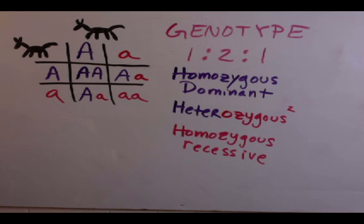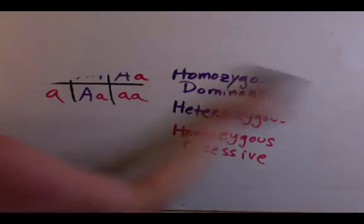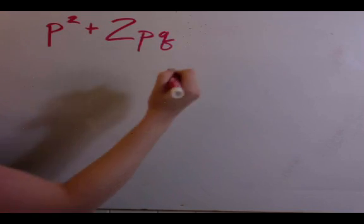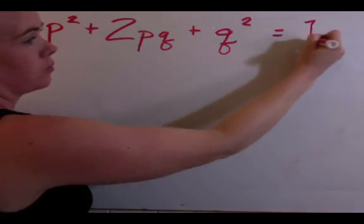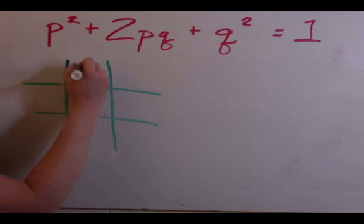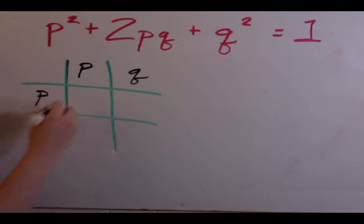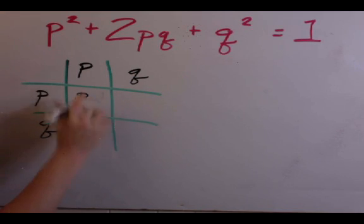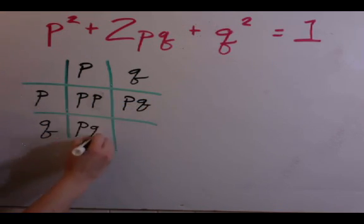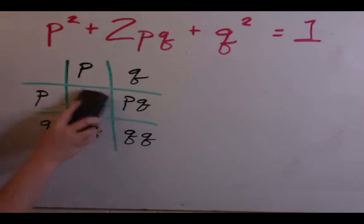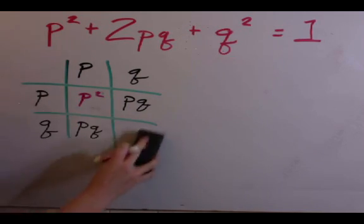The Hardy-Weinberg equation is a way to calculate genetic variation of a population at equilibrium. To explore this equation, we can examine simple genetic locus at which there are two alleles. P represents the dominant allele, and Q represents the recessive allele. Now, visually, you can see where we get our P-squared, Q-squared, and 2PQ from.